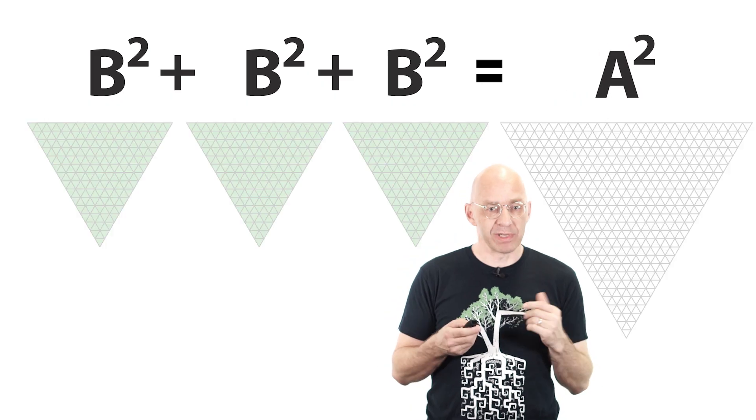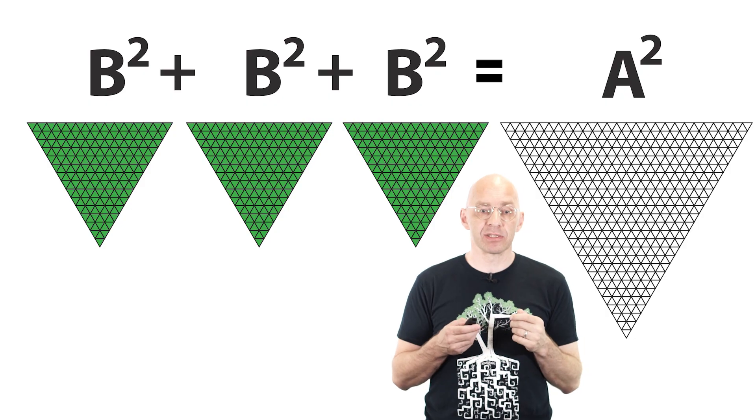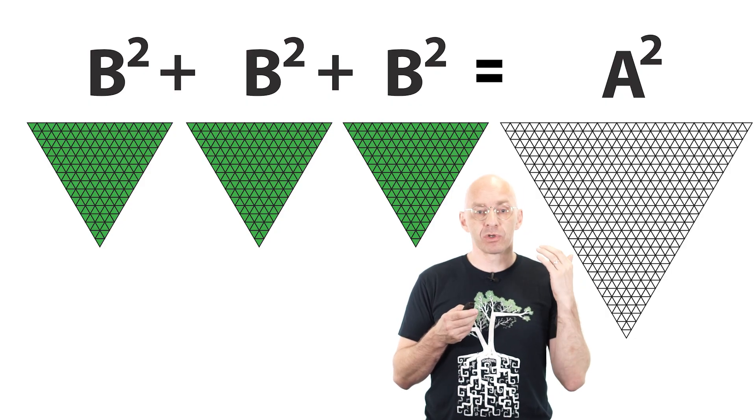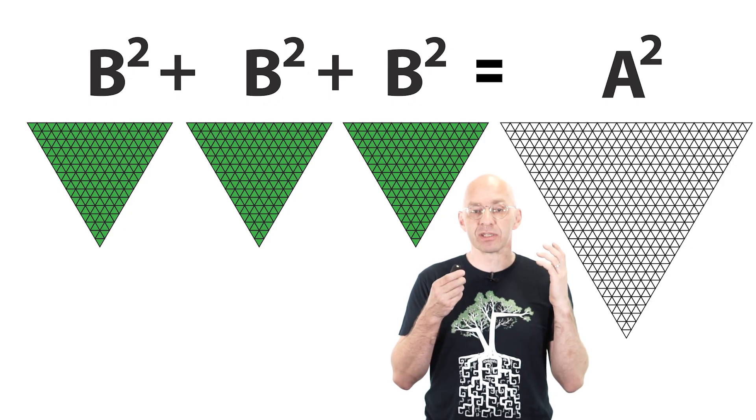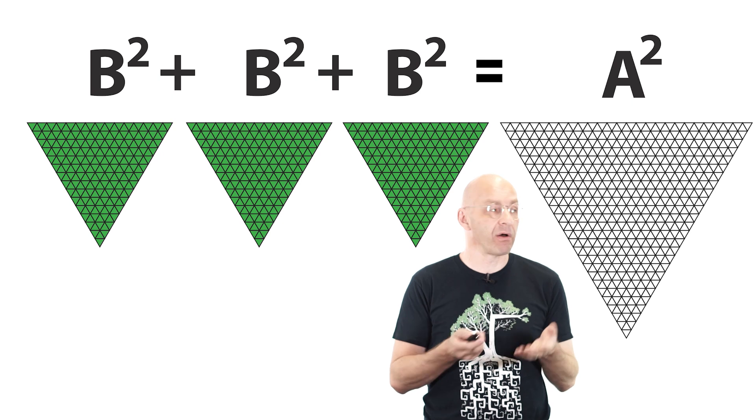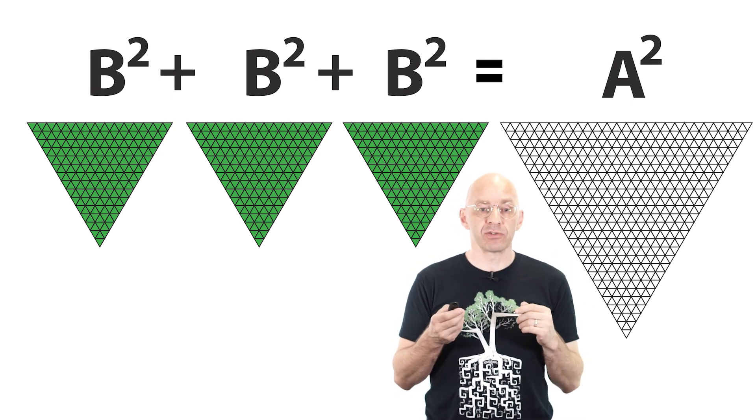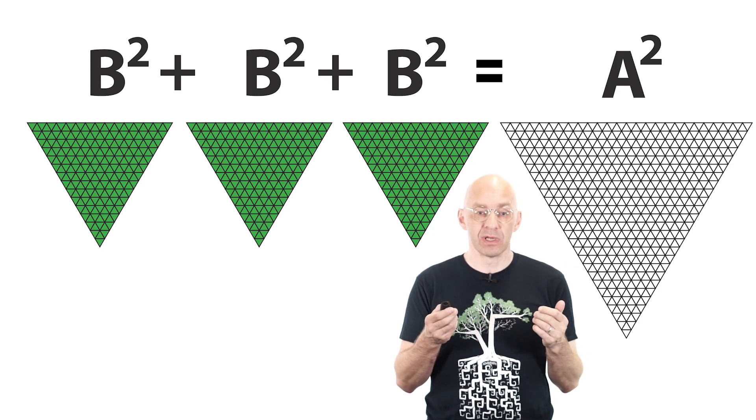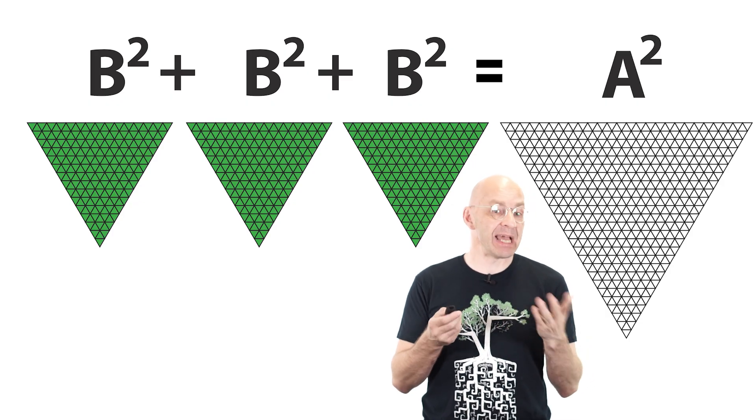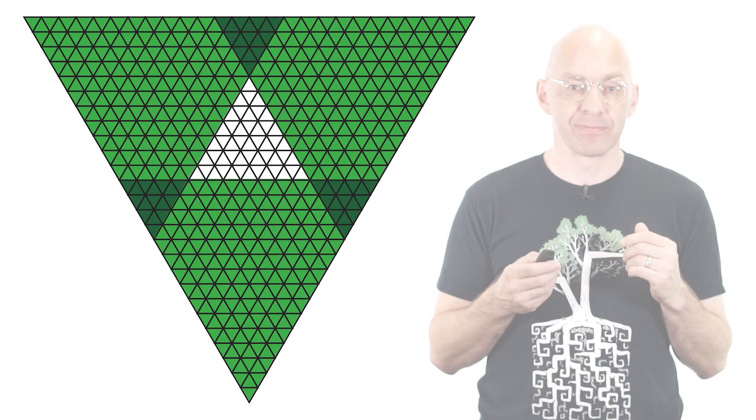But this would also mean that combined the three green triangular squares of widths b would contain exactly the same number of mini triangles as the triangular square grid of widths a on the right. And this would mean that all the mini green triangles on the left would fit exactly into a large grid on the right. And here's a super stylish way to begin an attempt to fit them. Pretty.